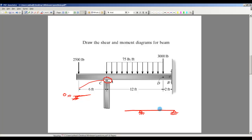Now I have a point load right here which is 3000 pounds, and I have a distributed load from here all the way to here which is 75 pounds per foot, and I'll have 2500 pounds.